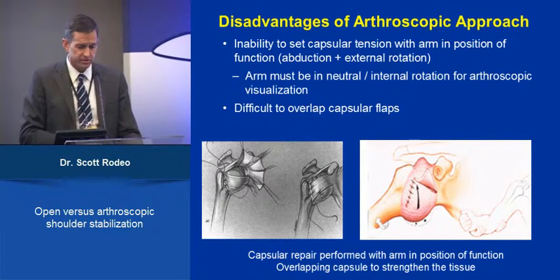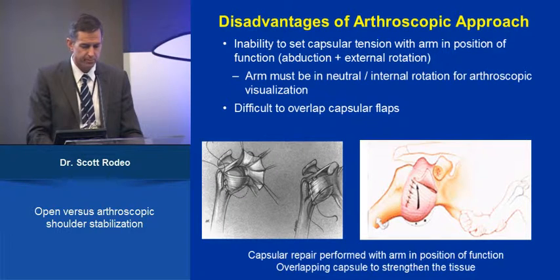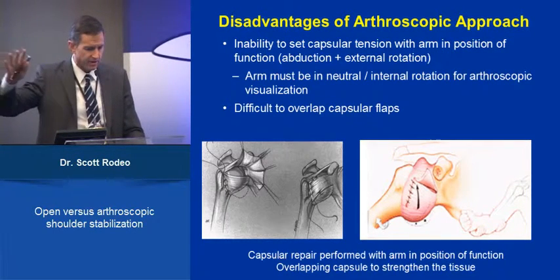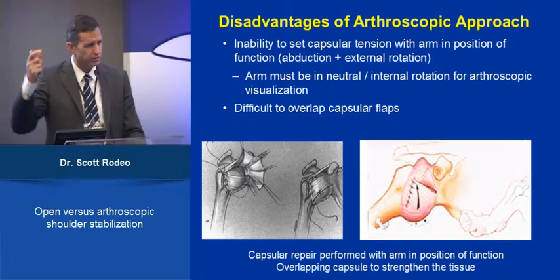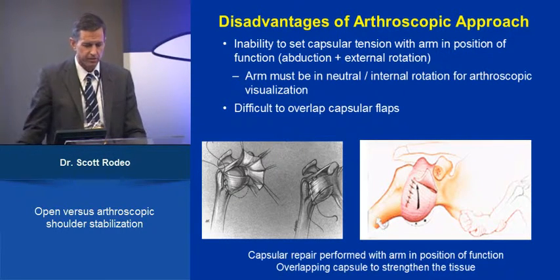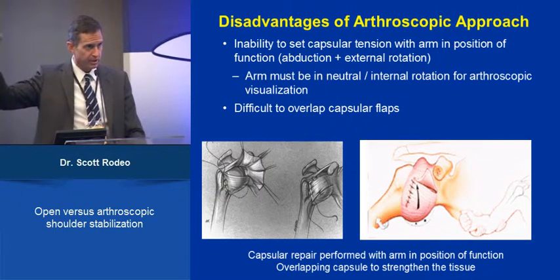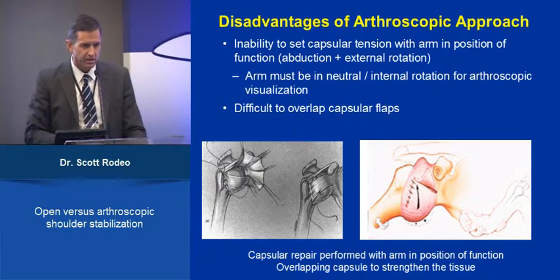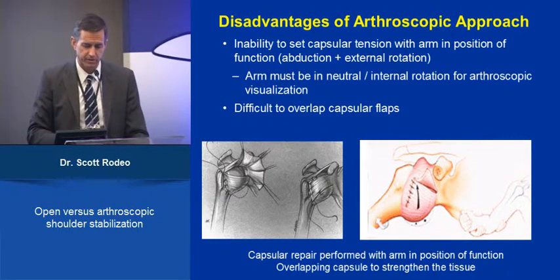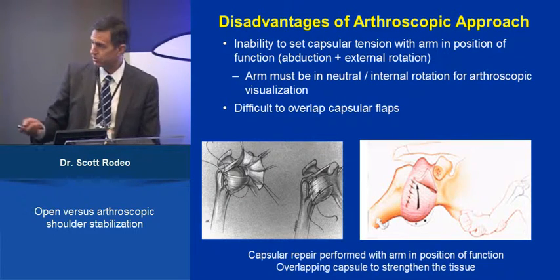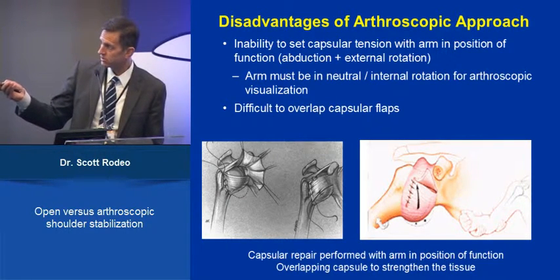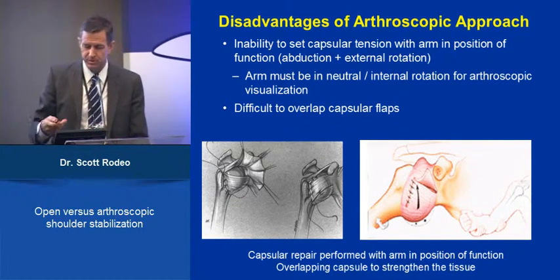One disadvantage of the arthroscopic approach is that we don't have the ability to set the capsular tension with the arm in the position of function — in varying degrees of abduction and external rotation — hard to do arthroscopically. Generally the arm is in a more neutral, internal rotation position for arthroscopic visualization. Similarly, it's hard to overlap our capsular flaps with the arthroscopic approach, whereas the open approach allows you to do this overlapping.